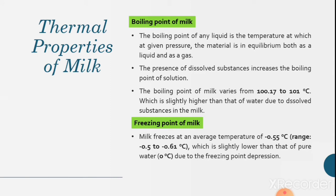Thermal properties of milk. The boiling point of any liquid is the temperature at which, at given pressure, the material is in equilibrium both as liquid and as gas. The presence of dissolved substances increases the boiling point of solution. The boiling point of milk varies from 100.17 to 101 degrees Celsius, which is slightly higher than that of water due to dissolved substances in the milk.